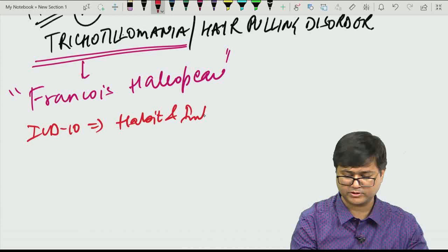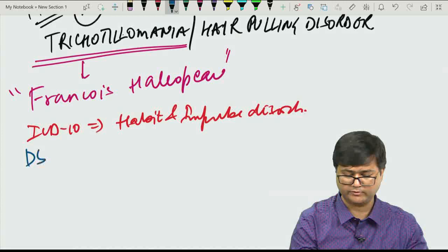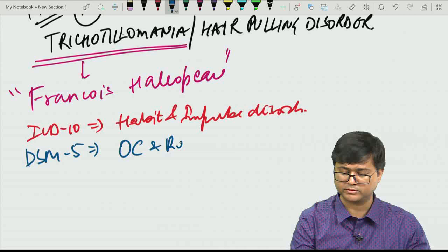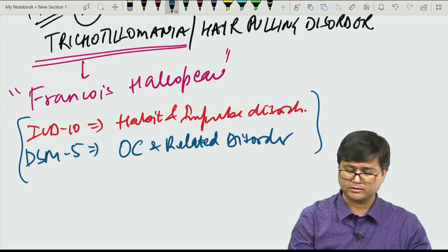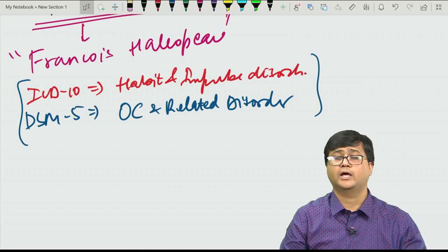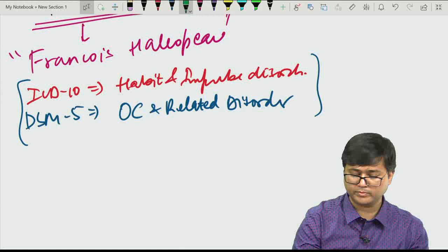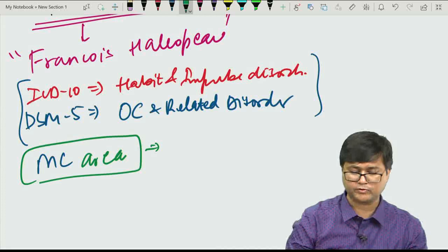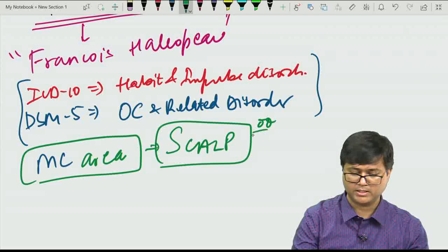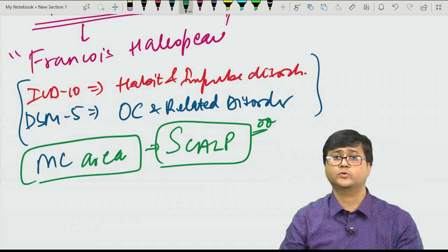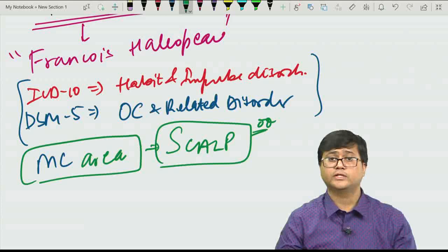In ICD-10, trichotillomania is described under habit and impulse disorder, while in DSM-5 it is under obsessive compulsive and related disorders. There is a marked intense impulse to pull hair, which decreases tension only when the person succeeds. The most common area is the scalp, followed by eyebrows, eyelashes, beard, armpits, and rarely pubic hair.